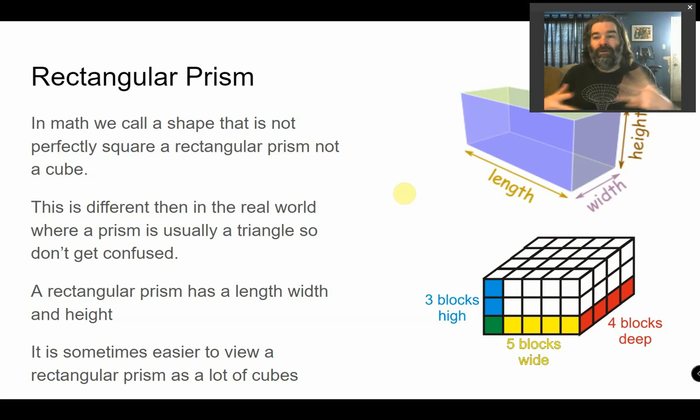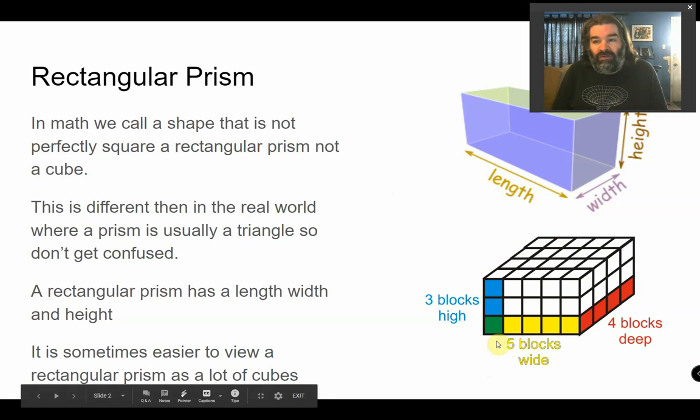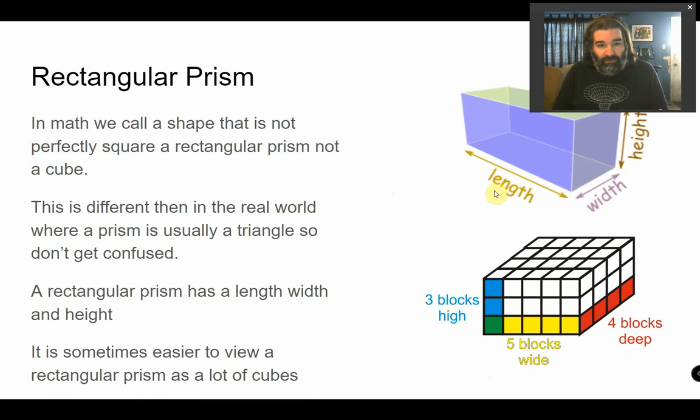But in math it's got a very special shape name because mathematicians feel it necessary to name things more difficultly than normal. So in the real world, as I said, a prism is usually a triangle, but don't get confused. Prism does not mean triangle in math.